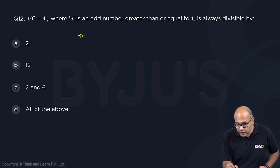n is an odd number, so when n equals 1 you will get this as 10 power 1 minus 4 which is 6.